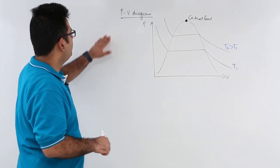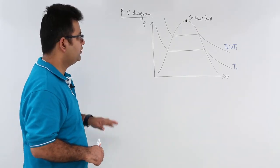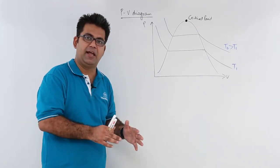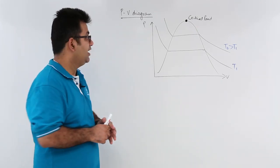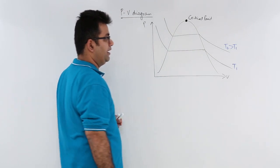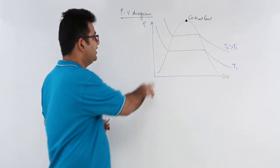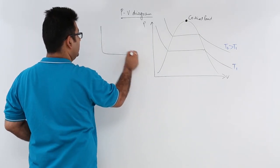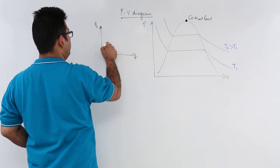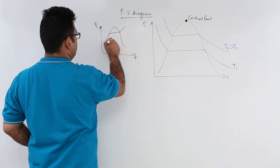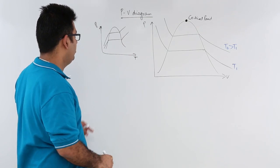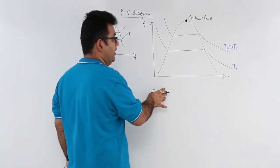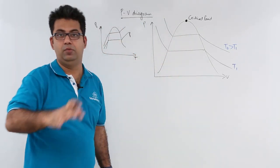In this video we will talk about the pressure volume diagram. The PV diagram and the PT diagram are very similar, except in the PV plot you have constant temperature lines with a downward trend. In the PT plot, constant pressure lines have an upward trend, whereas in the PV plot the constant temperature lines have a downward trend.